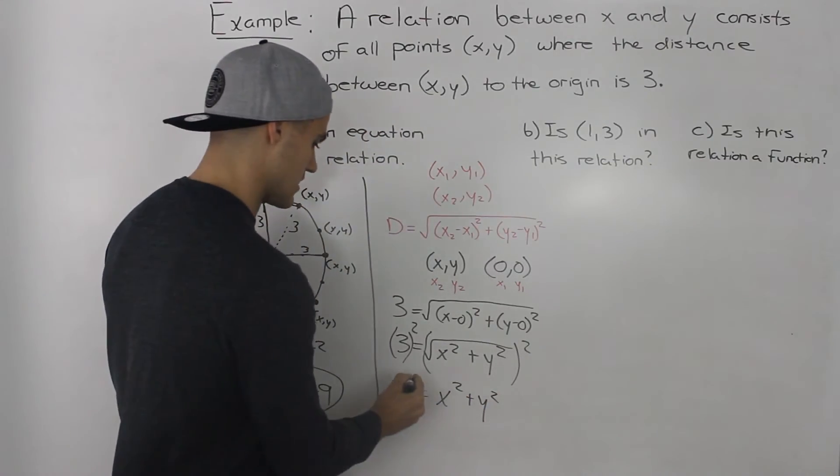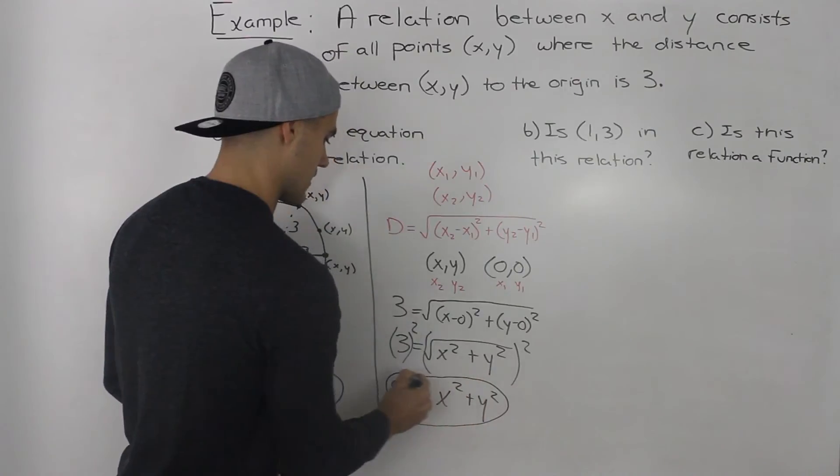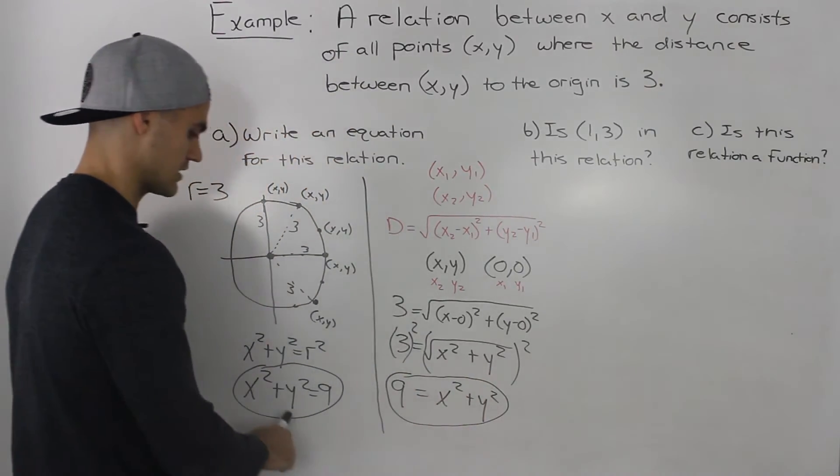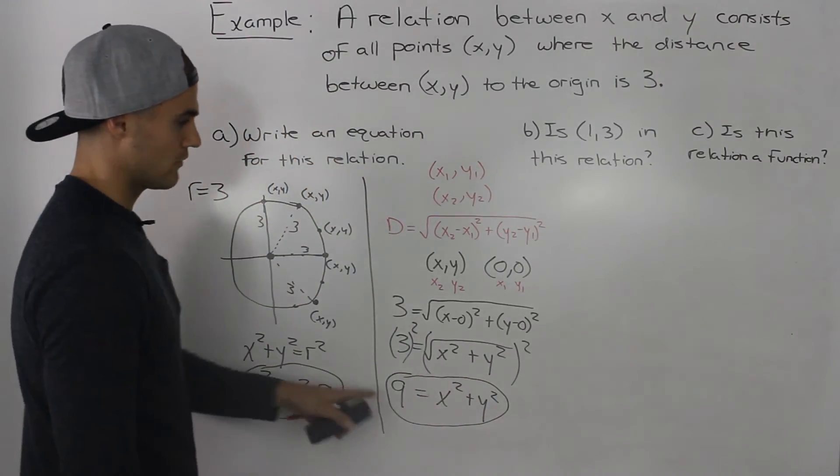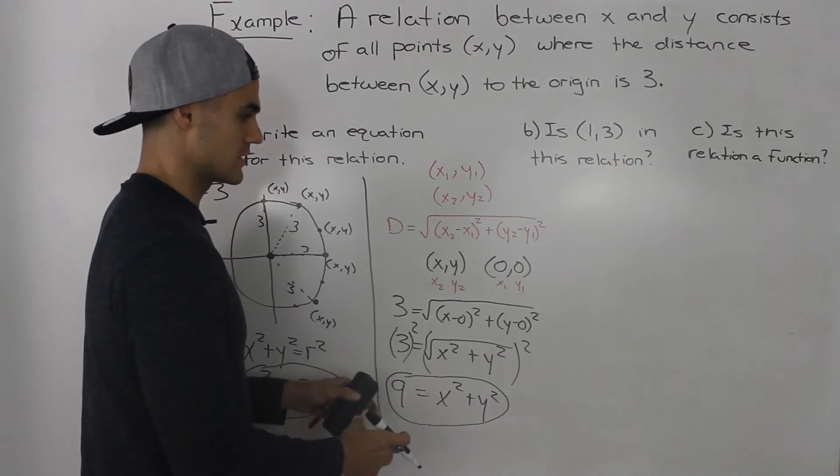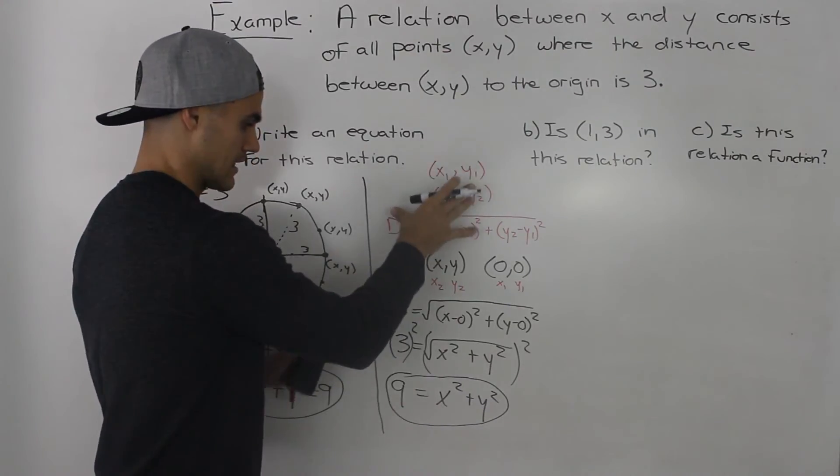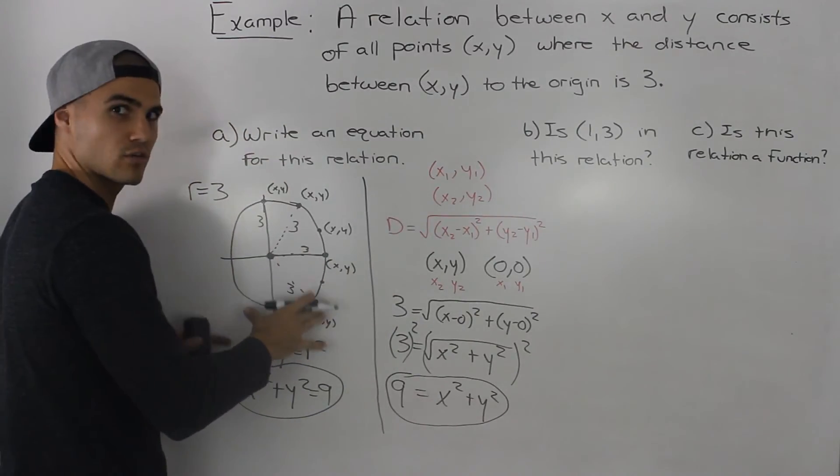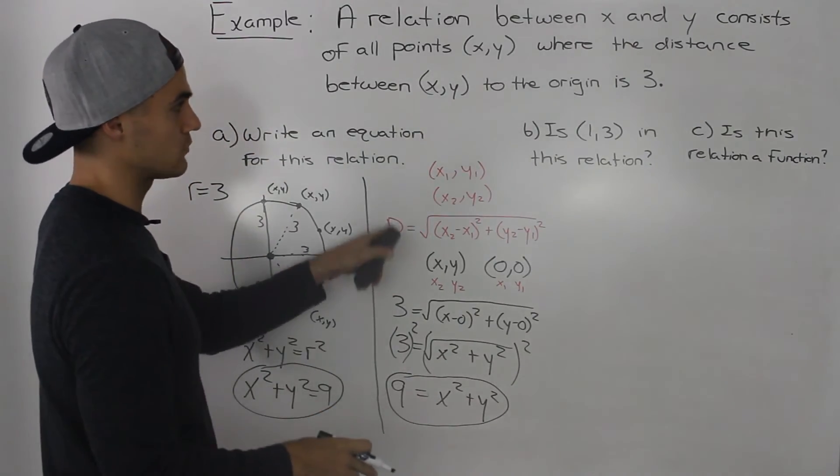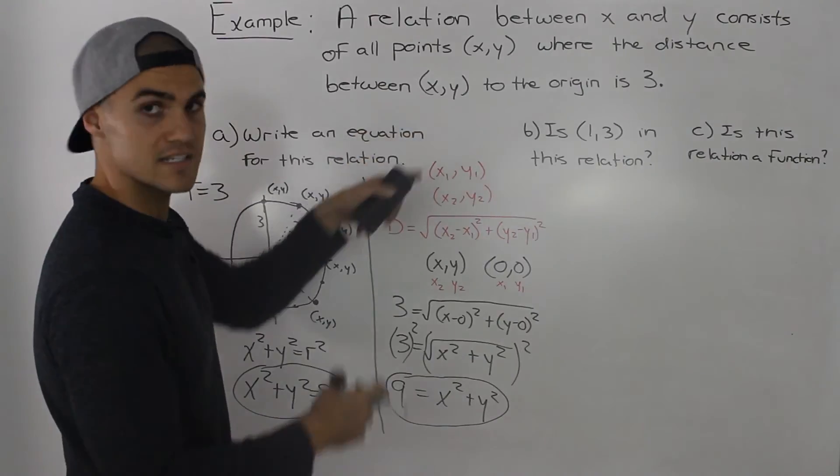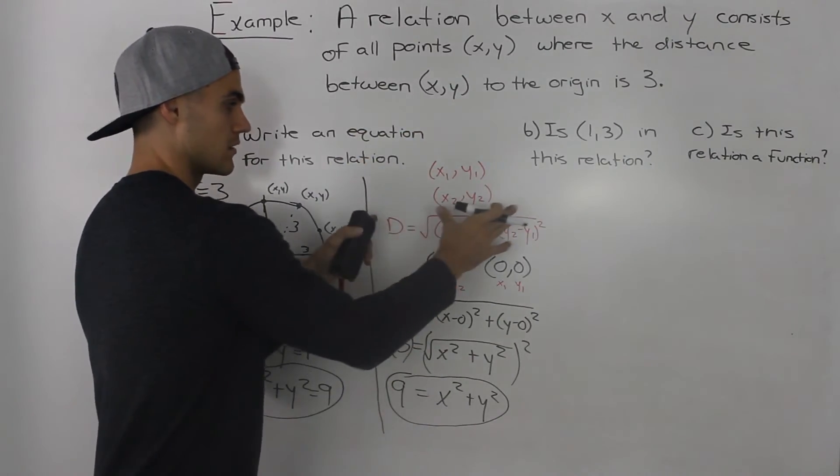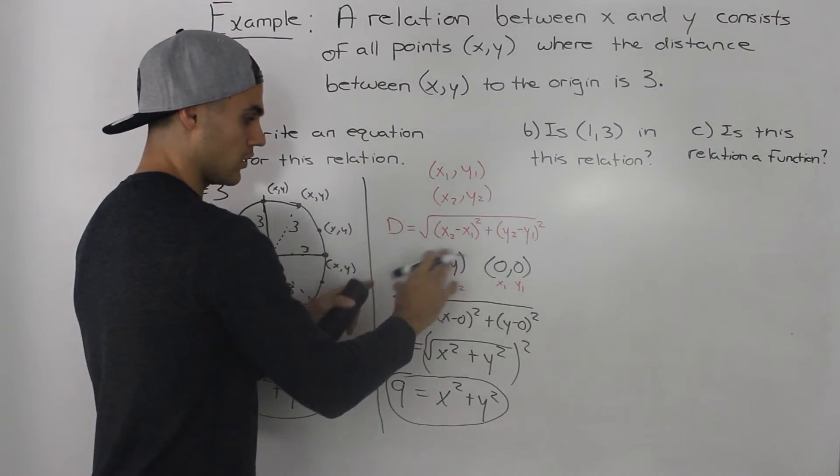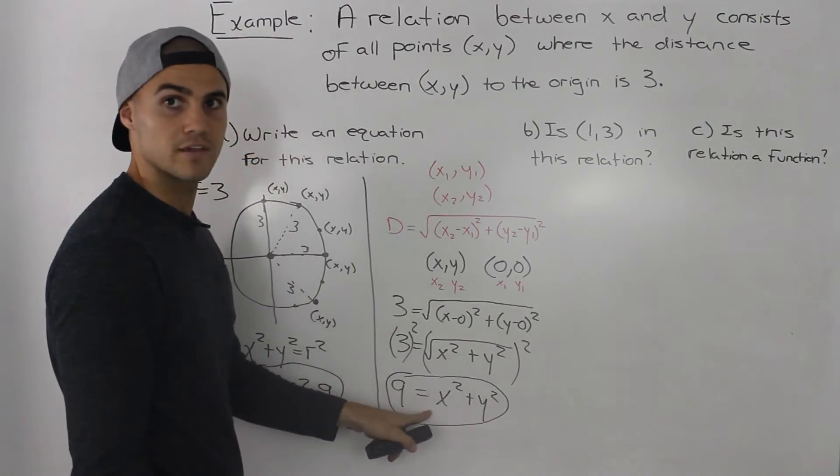And notice how this here is the same equation of the relation that we got here. However, in this way it was a lot more clean. We didn't stumble upon any realizations. This way was sort of a fluke. This way we realized that we were dealing with the distance between two points, got the formula, subbed all of our information in, and got this equation.